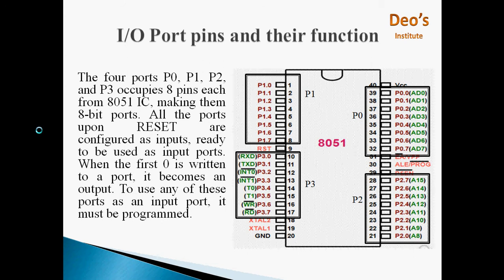We will start with IO PORT pins and their functions. There are total 4 IO PORTS available in 8051 microcontroller: port 0, port 1, port 2 and port 3. Each IO PORT occupies 8 pins from 8051 IC. Here we can see P0 has 8 pins, P1 has 8 pins. Similarly, P2 and P3 also have 8 pins. This makes them 8-bit ports.